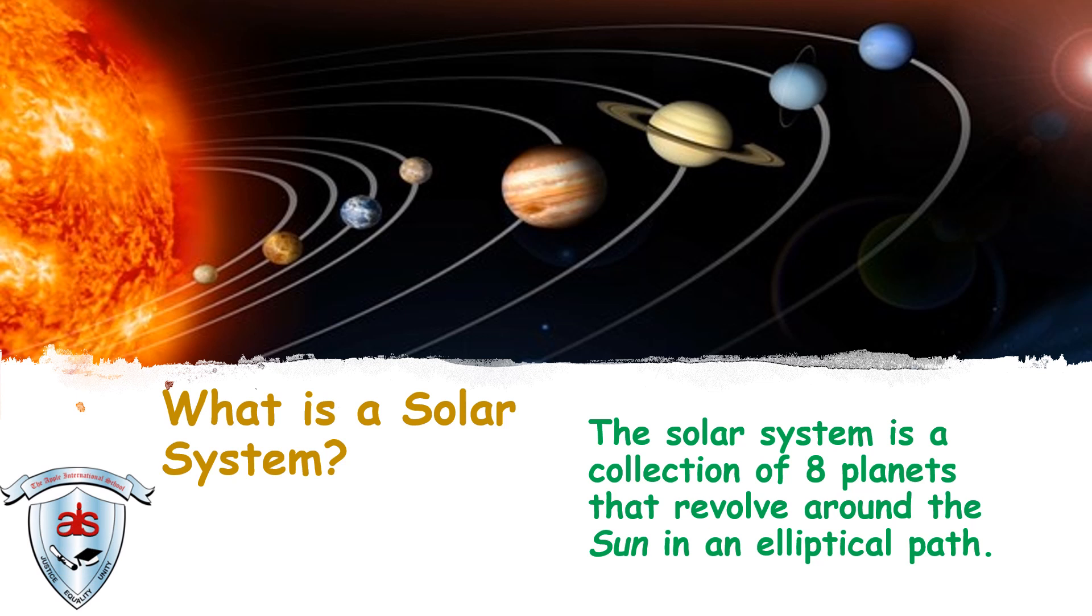You must be wondering what is this word elliptical path? Let me tell you children, elliptical means revolving around in an oval shaped path. Planets revolve around the sun in an oval shaped way. You can see it in our next slide.